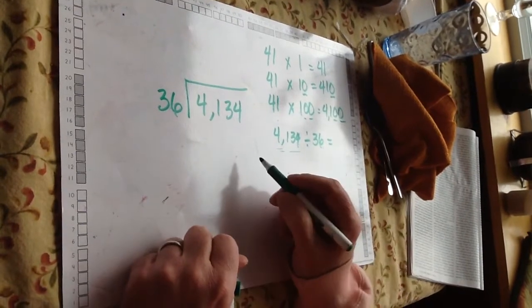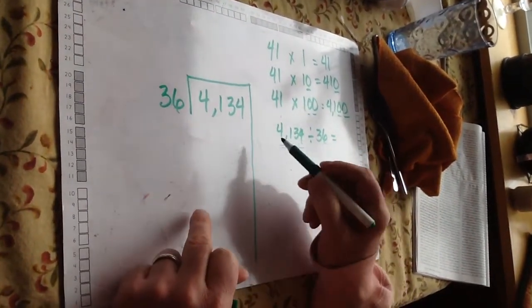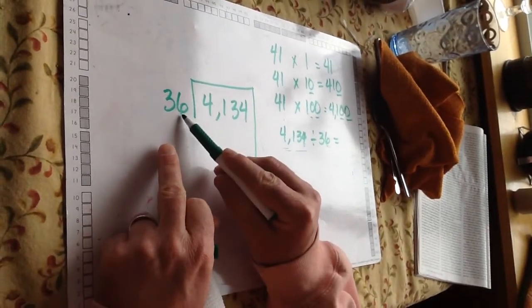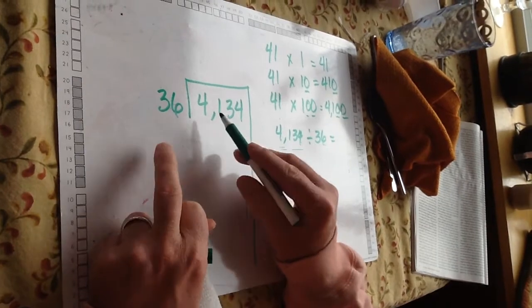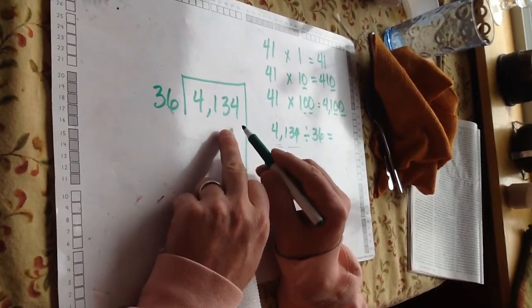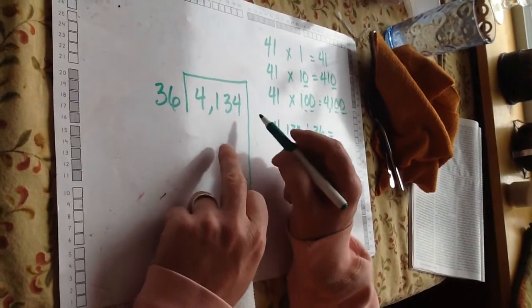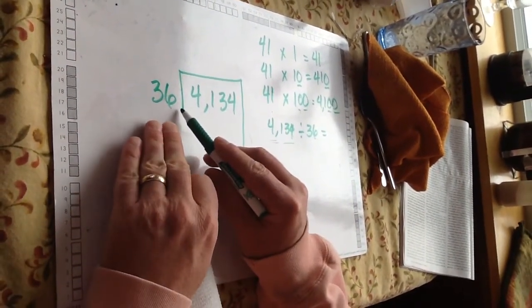Now, a way to estimate, we're going to think about groups of 36 that can fit in there. I know that one group of 36 is 36, that's really too inefficient. I know that 10 groups is going to be 360.